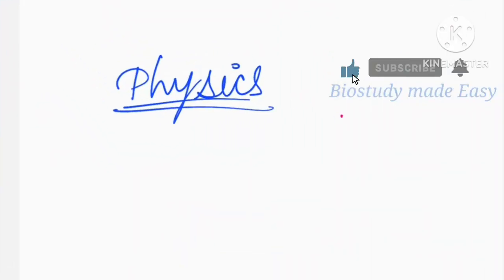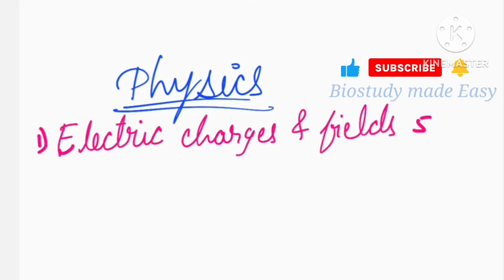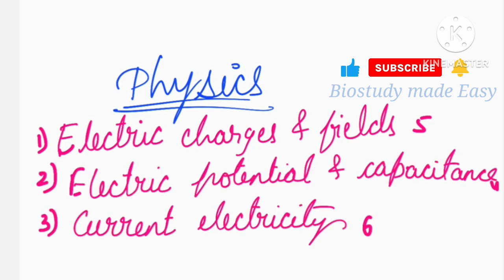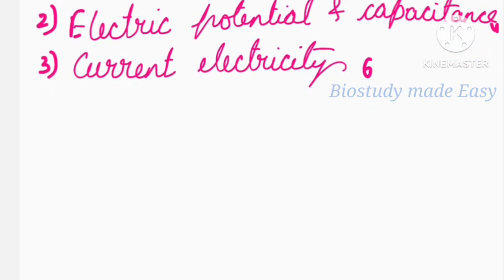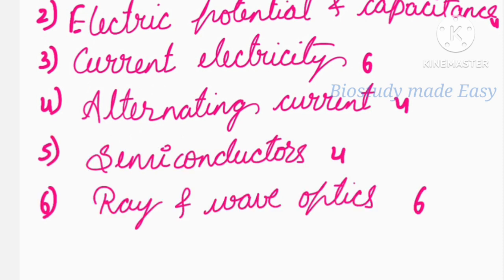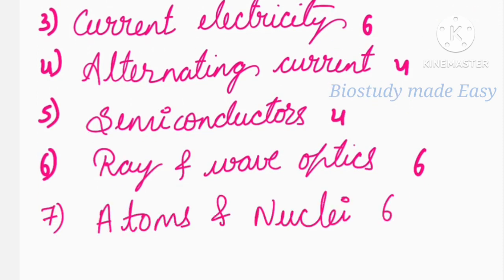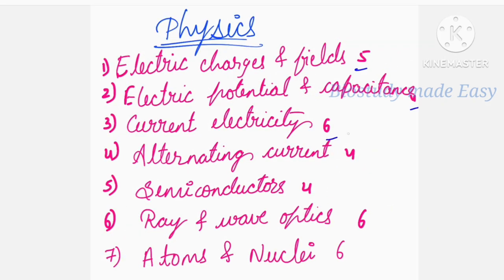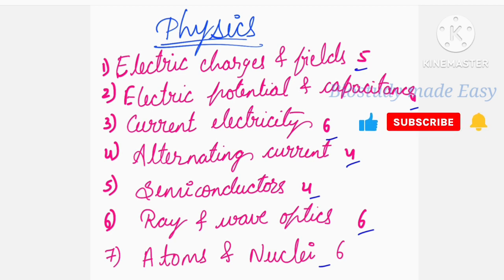Now we are going to see important chapters for KCET from Physics. First: Electric Charges and Fields, Electric Potential and Capacitance, Current Electricity, Alternating Current, Semiconductors, Ray and Wave Optics, and Atoms and Nuclei. These carry around five, four, six, four, four, six, six questions respectively.